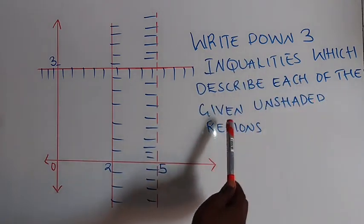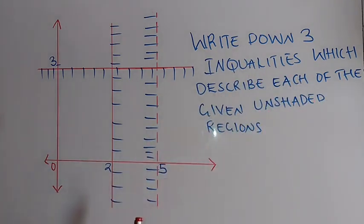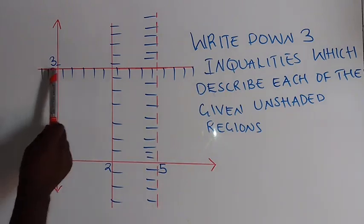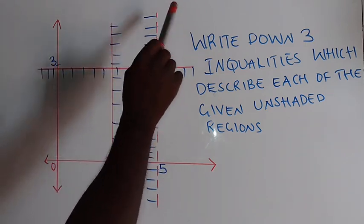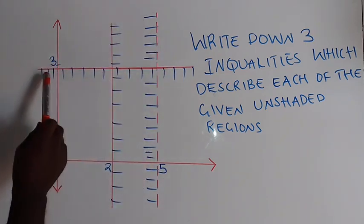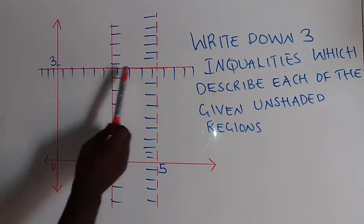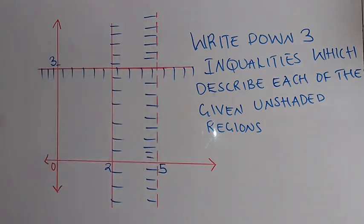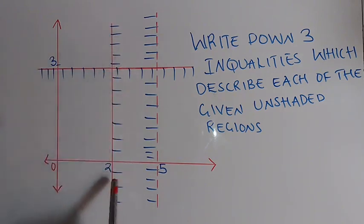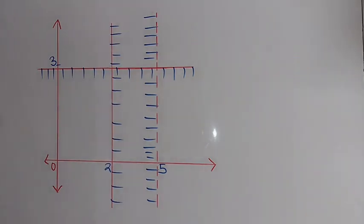The question is: write down three inequalities which describe each of the given unshaded regions. For this line, the shaded region is down here with the unshaded on top. We want to come up with an inequality that describes this unshaded region. We also have this other line shaded on one side.